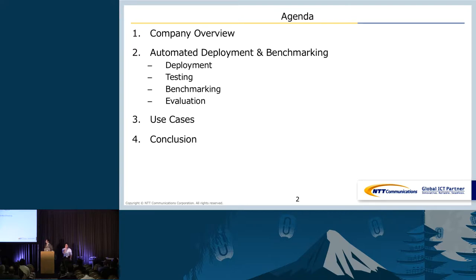Here is our agenda. Before we talk about our automation, we will give some overview of what our company is doing with OpenStack and why we are trying to automate this deployment and benchmarking. As you know, OpenStack automation is really hard work. So we will introduce a kind of best practice using Chef, Cobra, and Rally for OpenStack deployment automation.